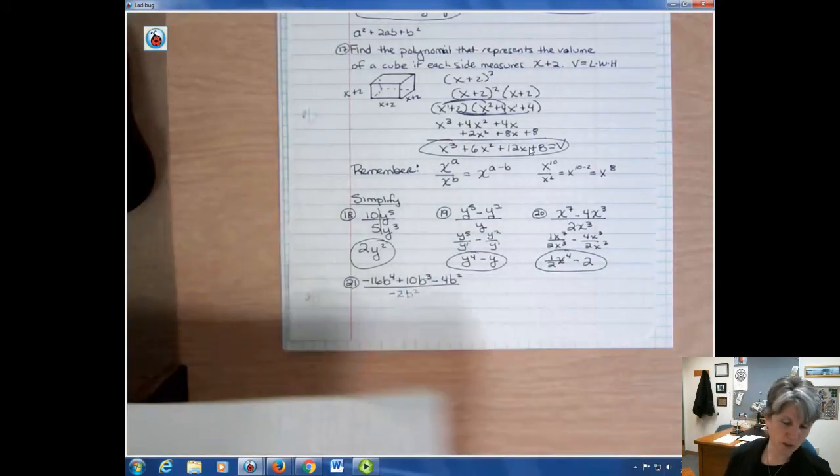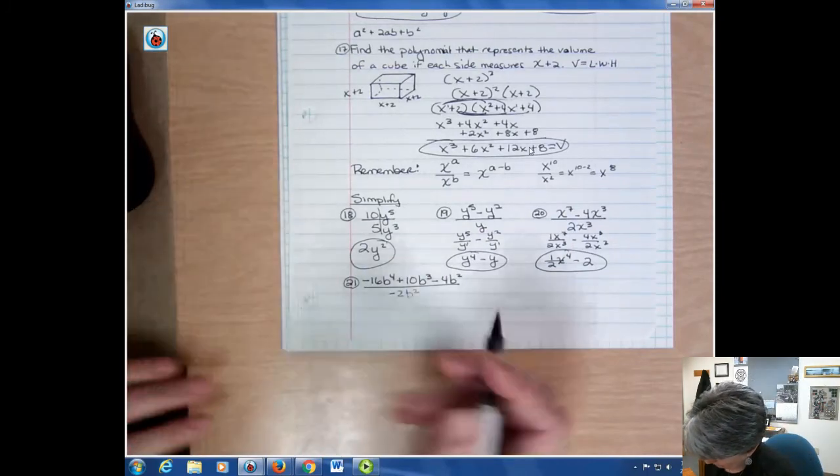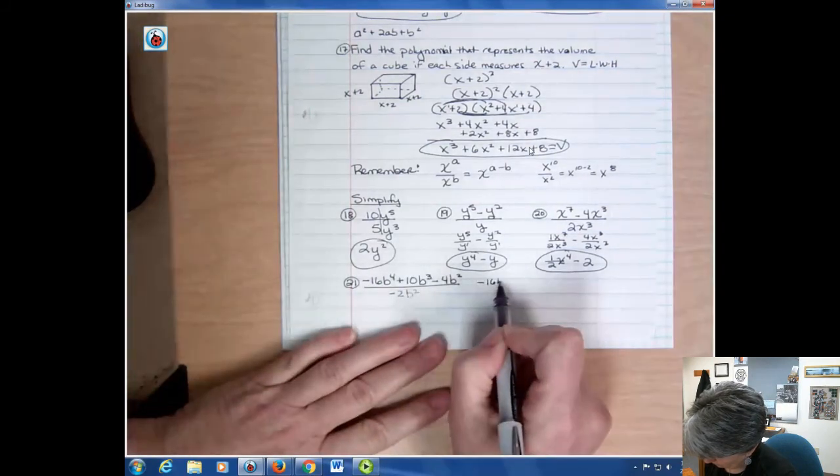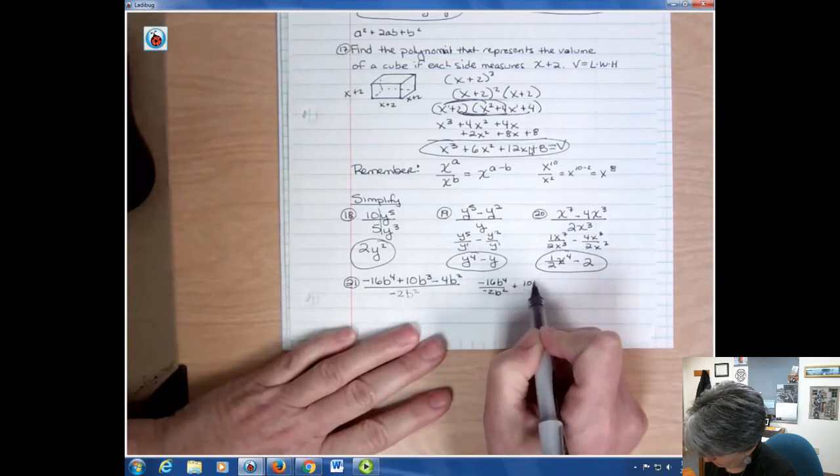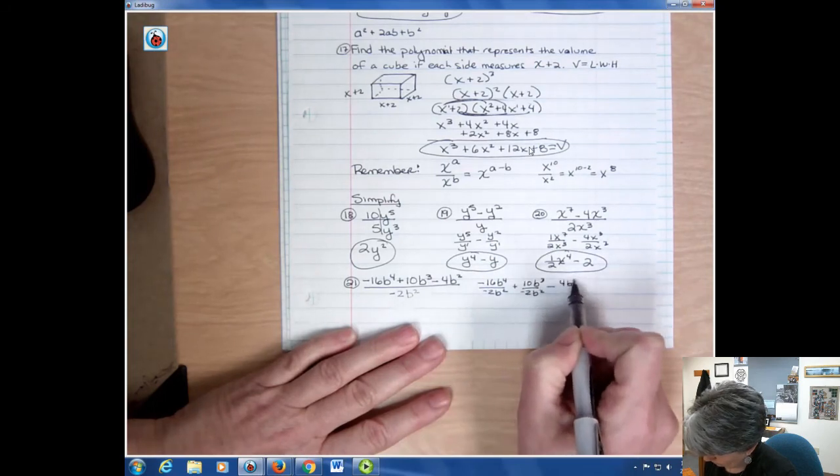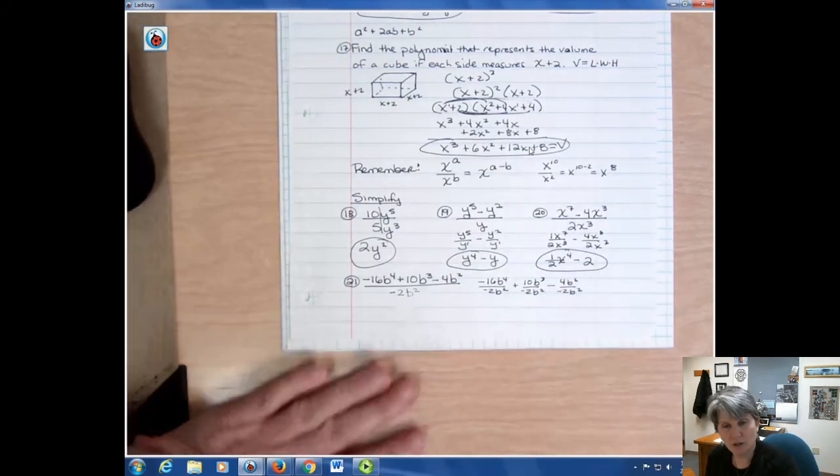All right. And finally, number 21. If you haven't done any of these on your own, maybe you want to try pausing and try this on your own. I've got three parts here. Negative 16b to the fourth over negative 2b squared. 10b to the third over negative 2b squared. Be sure and write your signs in there. 4b squared over negative 2b squared. And so I have to simplify those three parts.